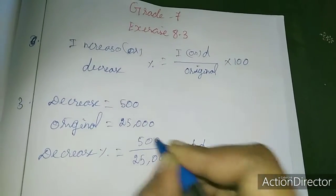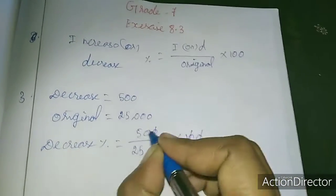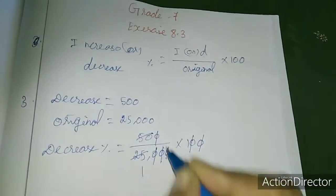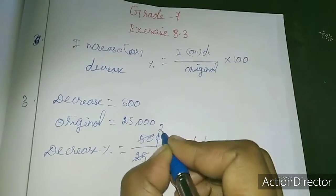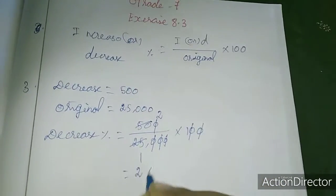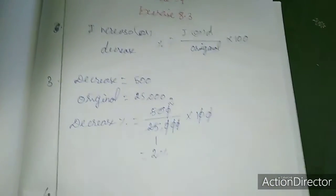Cancelling: 500 divided by 25,000 into 100. After cancellation, 25 cancels to give 2. So the decrease percentage is 2%.